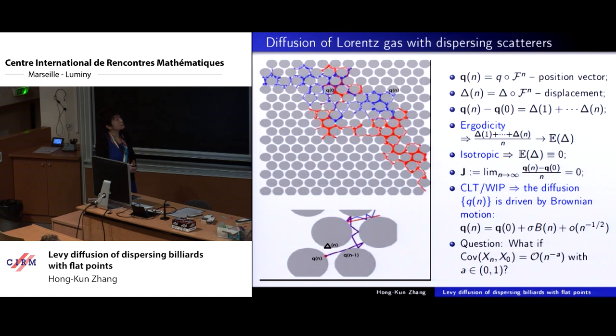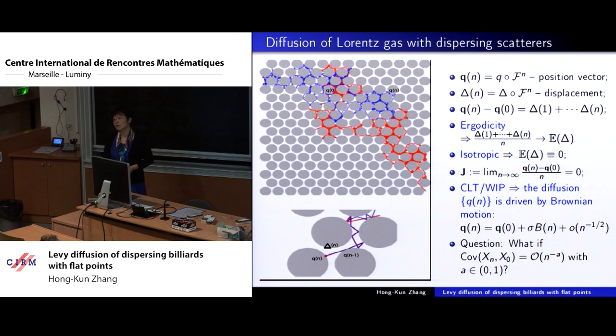For dispersing billiards, the central limit theory and invariance principle were proved. That means the diffusion for this kind of Lorentz gas is well understood — it is controlled by classical diffusion and converges to Brownian motion. The question we want to study is the case when the correlation decays slower — when α belongs to the range (0, 1).